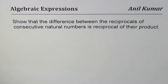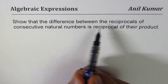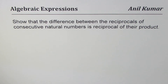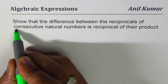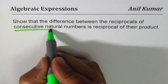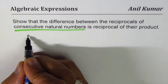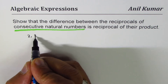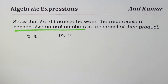The first thing we need to understand is what consecutive natural numbers are. Numbers like 2 and 3 are consecutive, and 10 and 11 are also consecutive natural numbers.